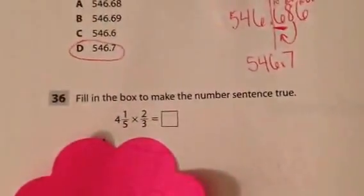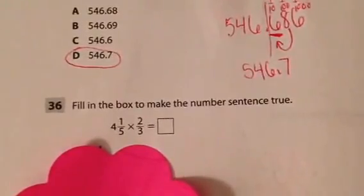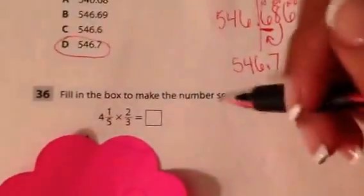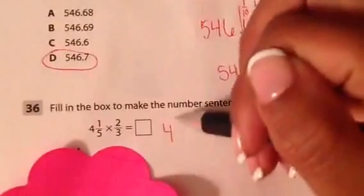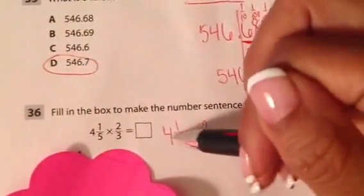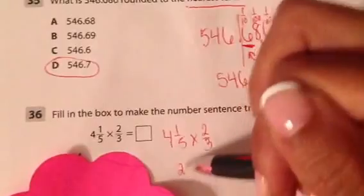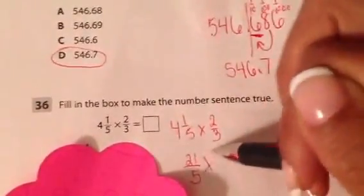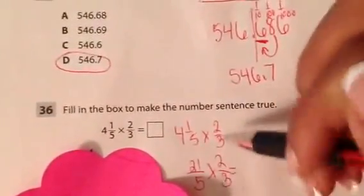Let's go down to the next one. Fill in the box to make the number sentence true. So I guess I'm going to solve it. I'm going to start by doing that. 4 and 1/5 times 2/3. 5 times 4 is 20 plus 1. I'm just turning this into an improper fraction.